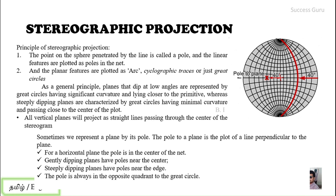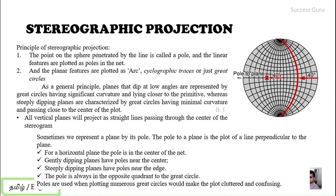You might wonder why we use poles. The answer is that poles are used when plotting numerous great circles would make the plot cluttered and confusing. When dealing with many data points of planar features — like strike and dip of bedding planes, axial planes, and so on — marking all of them as arcs on a stereonet would be confusing. So we use pole plots, which are quite useful when dealing with a large number of planar features.